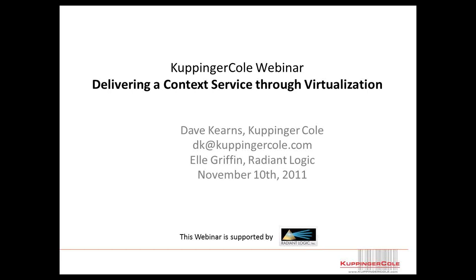Welcome to the second webinar in our two-part series on Delivering an Identity and Context Service, featuring RadiantLogic's Elle Griffin and Kuppinger Cole analyst Dave Kern. In today's session, Dave will look at how to define context as it relates to identity and will show how attributes and their relationships can yield insight about a person or entity. Elle will then explain how to link identity to context, how to build sentences using attributes, and give a short demonstration of Radiant's context browser.